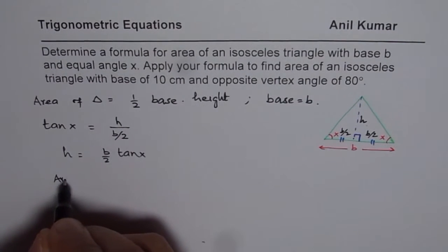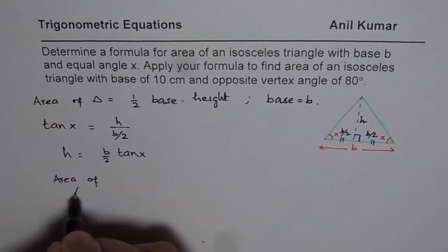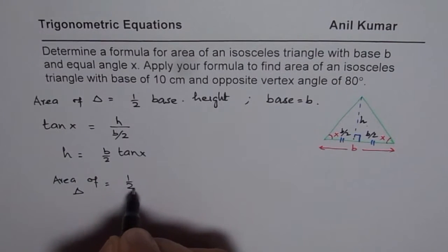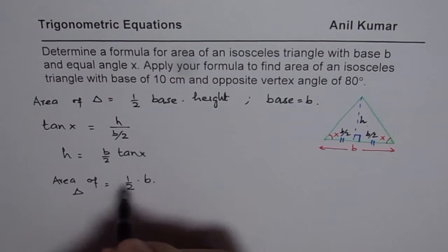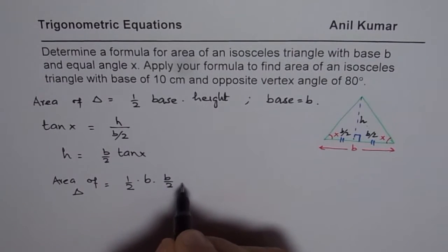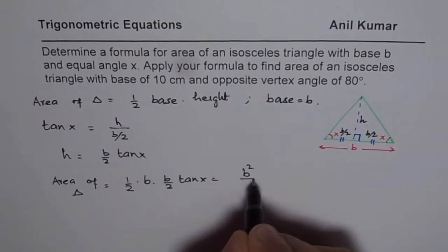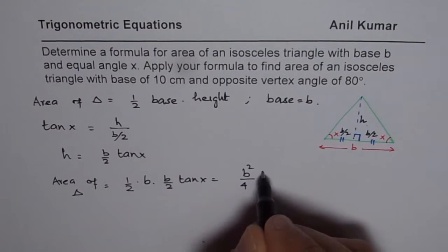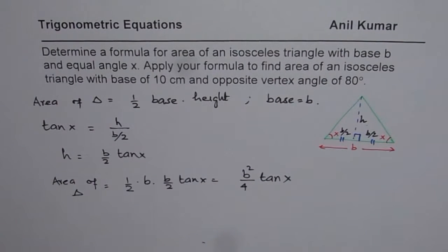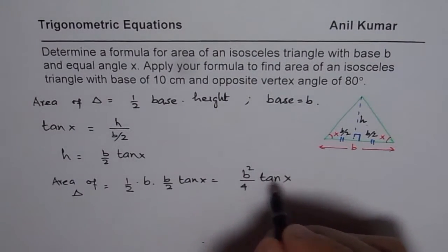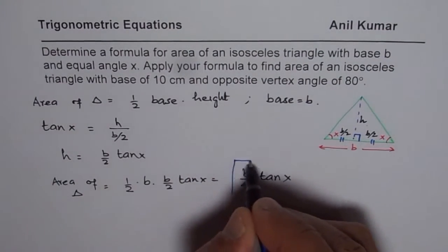So we will substitute b for base and b by 2 tan x for the height. So we get area of triangle equals to half of base is b and height is b by 2 tan x. So that is b squared by 4 tan x. So that becomes the formula for an isosceles triangle when the base and the angles of the base are given to us. So that is the formula which you can always use.